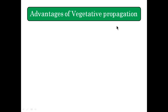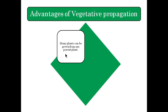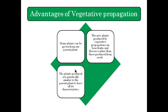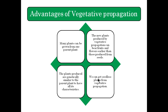Now let's discuss the advantages of vegetative propagation. First, many plants can be grown from one parent plant. Second, new plants produced by vegetative propagation can bear fruits and flowers earlier than those produced from seeds. Third, the plants produced are genetically similar to the parent plant and have all its characteristics. Finally, we can get seedless plants through vegetative propagation — for example, by grafting we can produce different varieties of seedless plants as well as a variety of flowers and fruits.